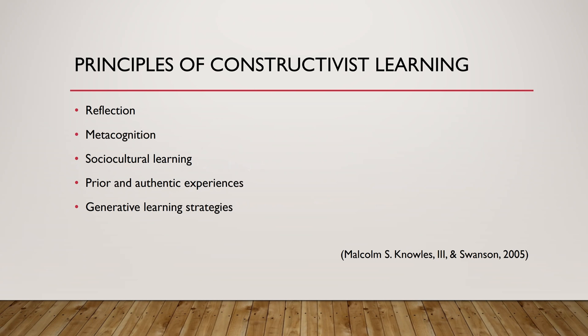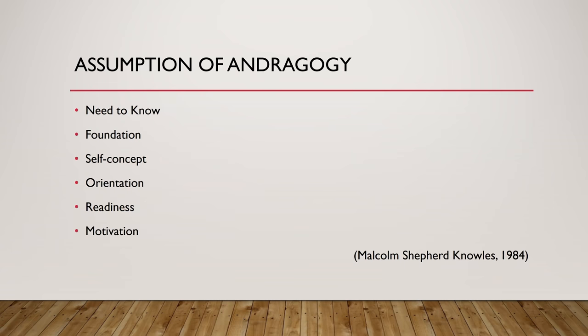Anytime you look into this you're going to see Malcolm Knowles's name — he was one of the pioneers of really digging into this and publishing a lot of literature about it. With andragogy, things like the need to know: adults are motivated in a very specific way, as opposed to children. They need to know why they're being taught something, and they need foundations for that learning, self-concept, and the ability to take control of their learning — we as adults want to self-drive ourselves toward our goals.